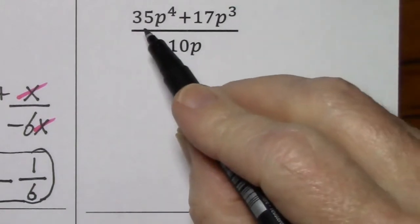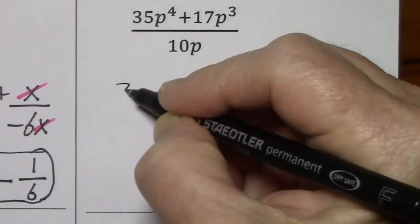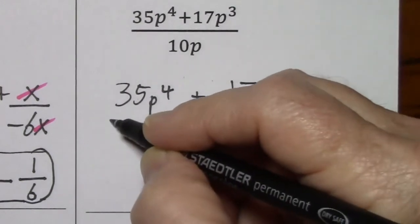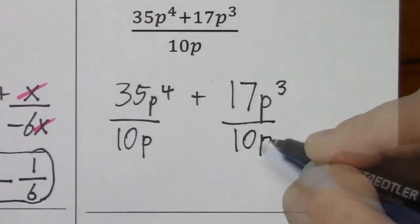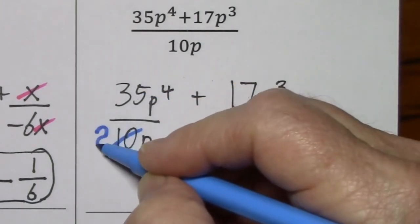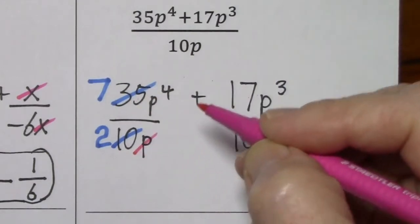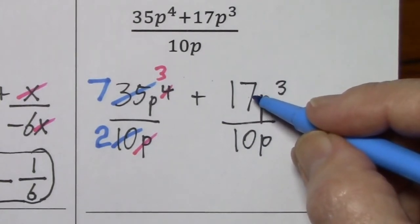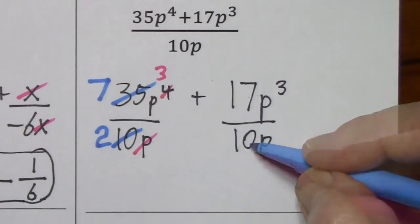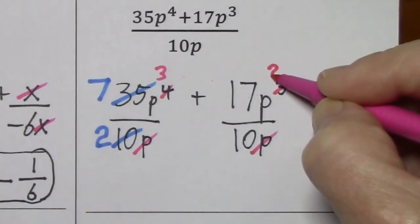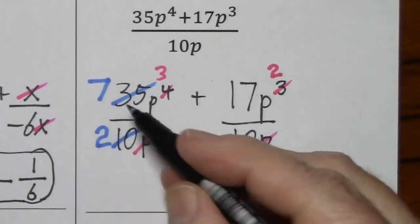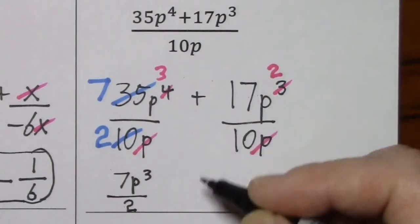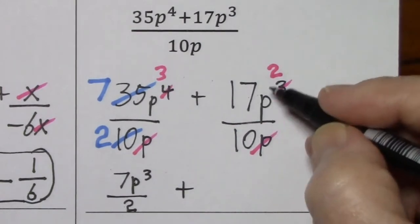Looking over here, there are only two terms in the numerator. 10p is in each denominator. We can divide by 5, divide by 5, and cross out p, subtract 1. With the 10 and 17, there are no common factors — we cannot simplify them — but we can cross out p and subtract 1. So we have 7p to the 3rd over 2, positive, and negative 17p squared over 10.